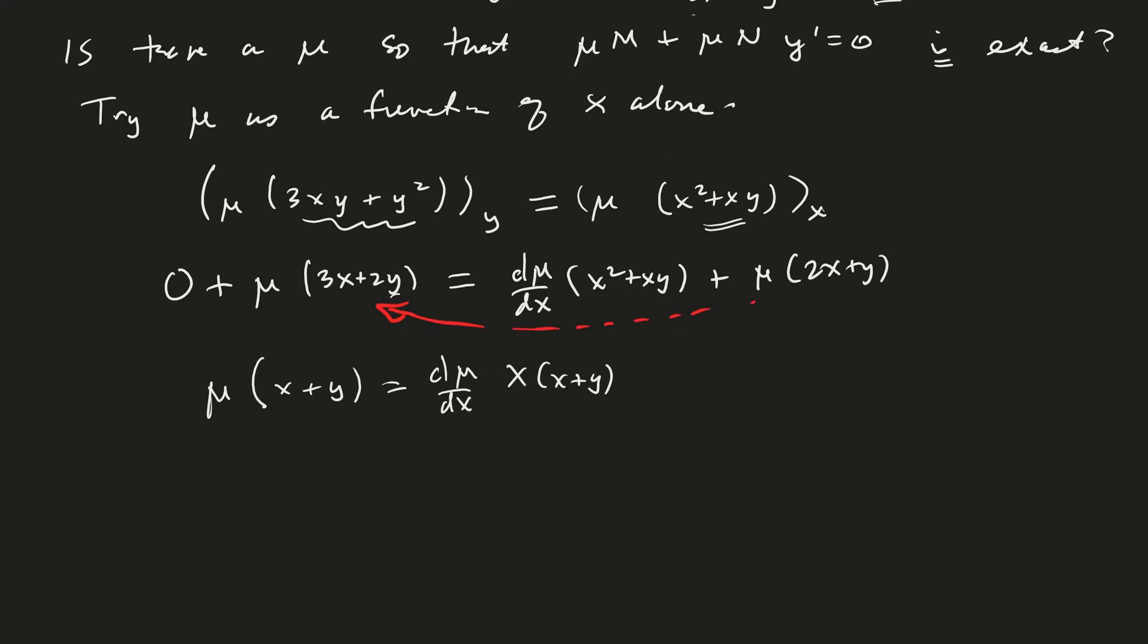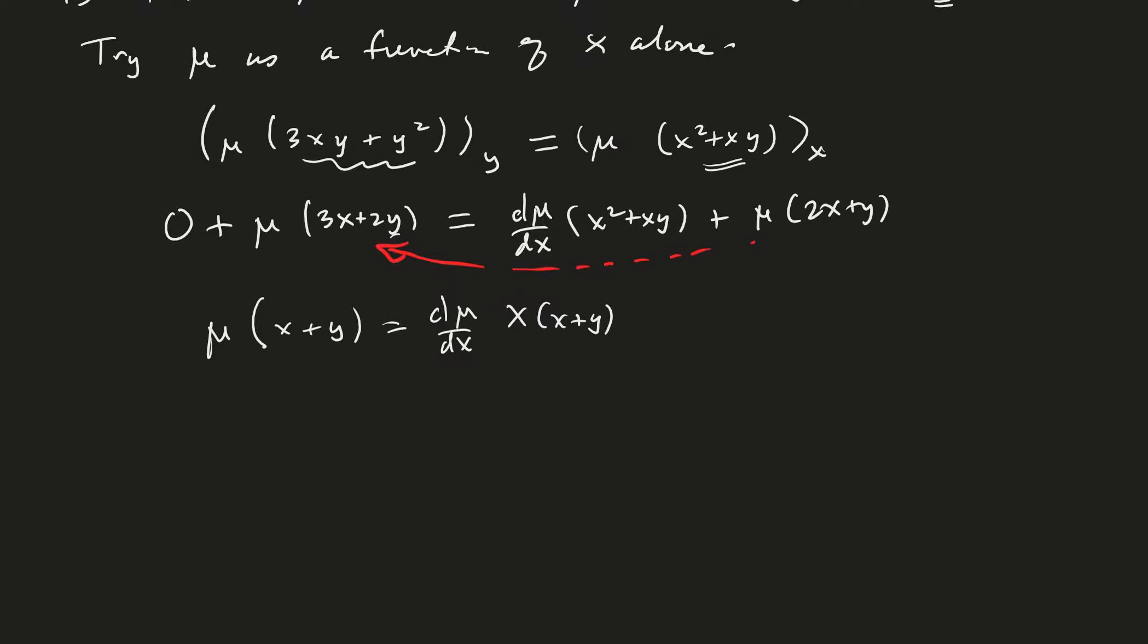Good. Now what are we going to do? I think we can divide both sides, right? And so we have mu times x plus y divided by x times x plus y. You saw that coming, didn't you? It's d mu over dx. Good. x plus y cancel. And so what we have then is one over x dx, bring over the mu, one over mu d mu, right?